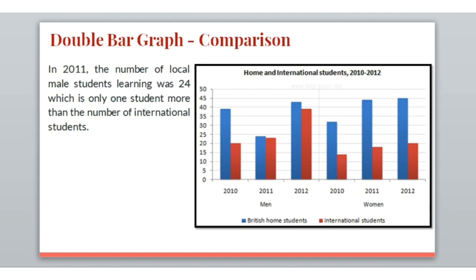The next slide talks about comparison. The sentence goes like this: in 2011 the number of local male students learning was 24, which is only one student more than the number of international students. Pay attention to the first part of the graph which talks about male students. You can see 2010, 2011, and 2012 years written for male students taking admission. In 2011 the blue color bar is a little higher than the red color bar, where blue stands for British home students and red for international students.